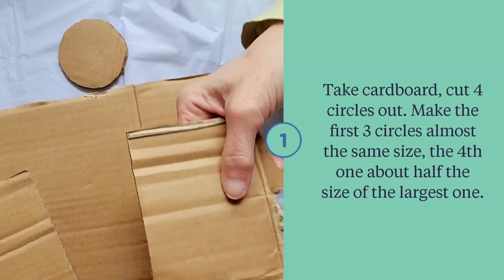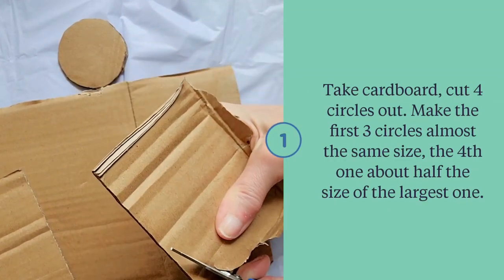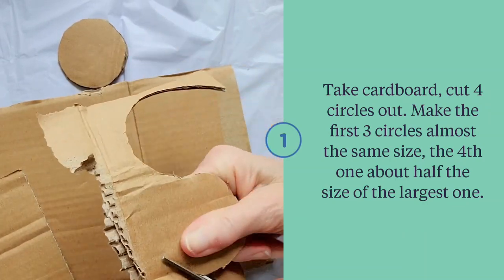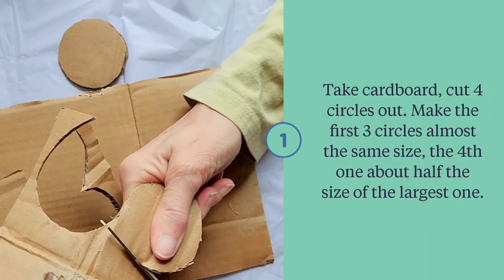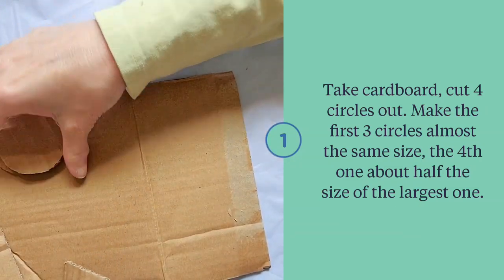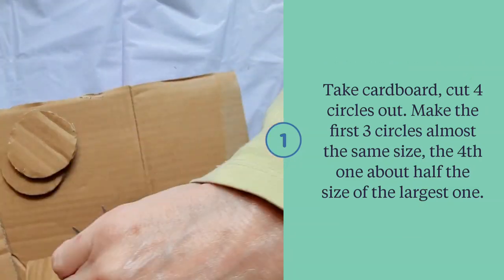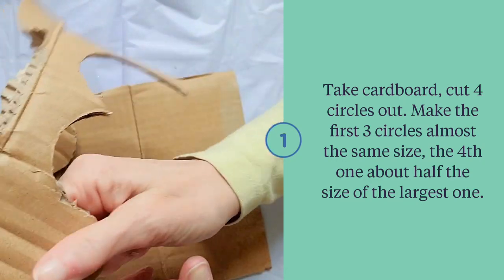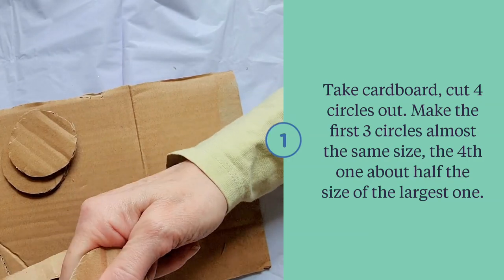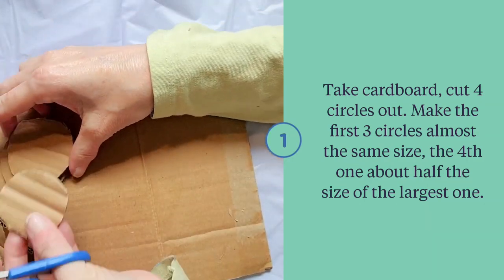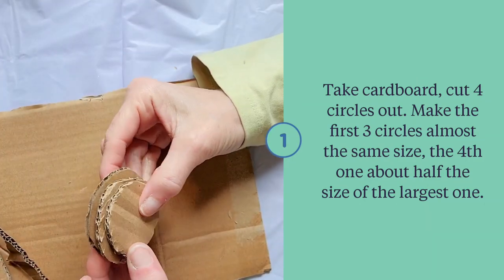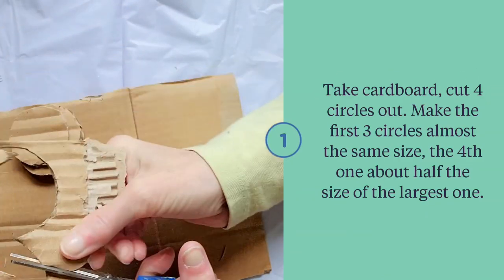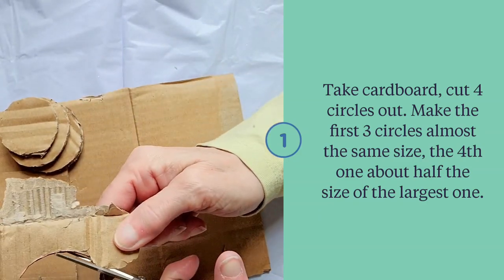Here I'm taking cardboard and cutting out four circles. Each one is a little bit smaller than the previous one, but the very last circle will be half the size of the first one. So these run about two inches, and our very last circle will just be a little one-inch circle.